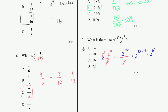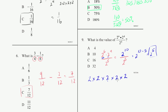We don't see 2 to the 5th among the choices, so we need to multiply it out. 2 to the 5th is 2 times 2 times 2 times 2 times 2 — that's 2 times itself 5 times. 2 times 2 is 4, times 2 is 8, times 2 is 16, times 2 is 32. So that is our answer, D.